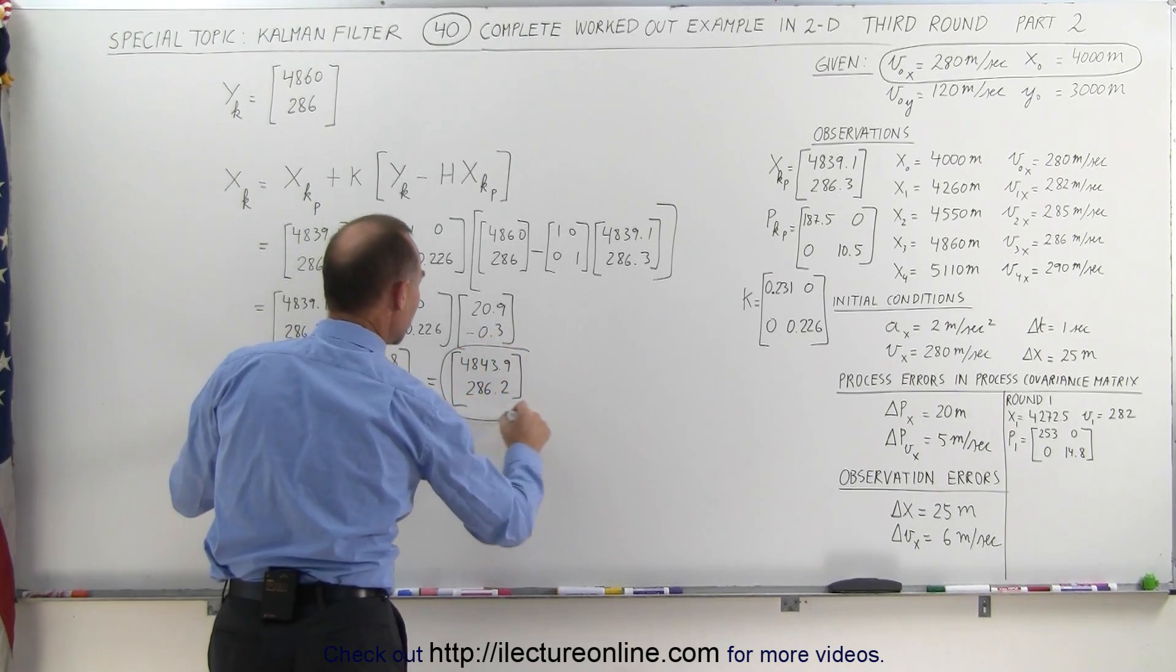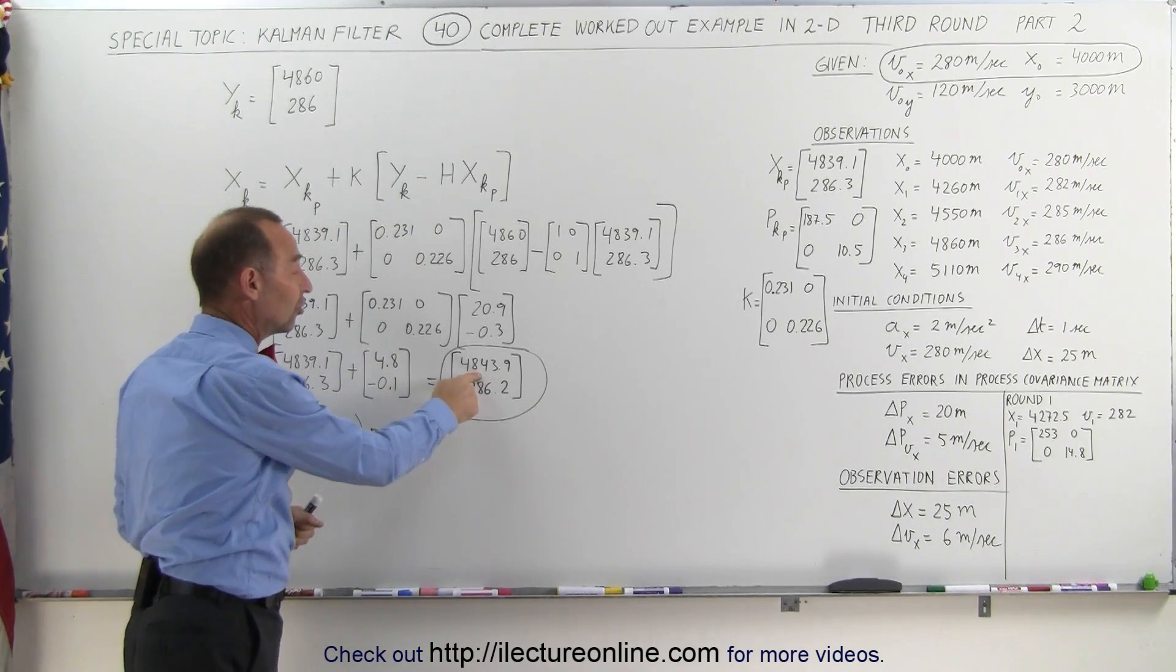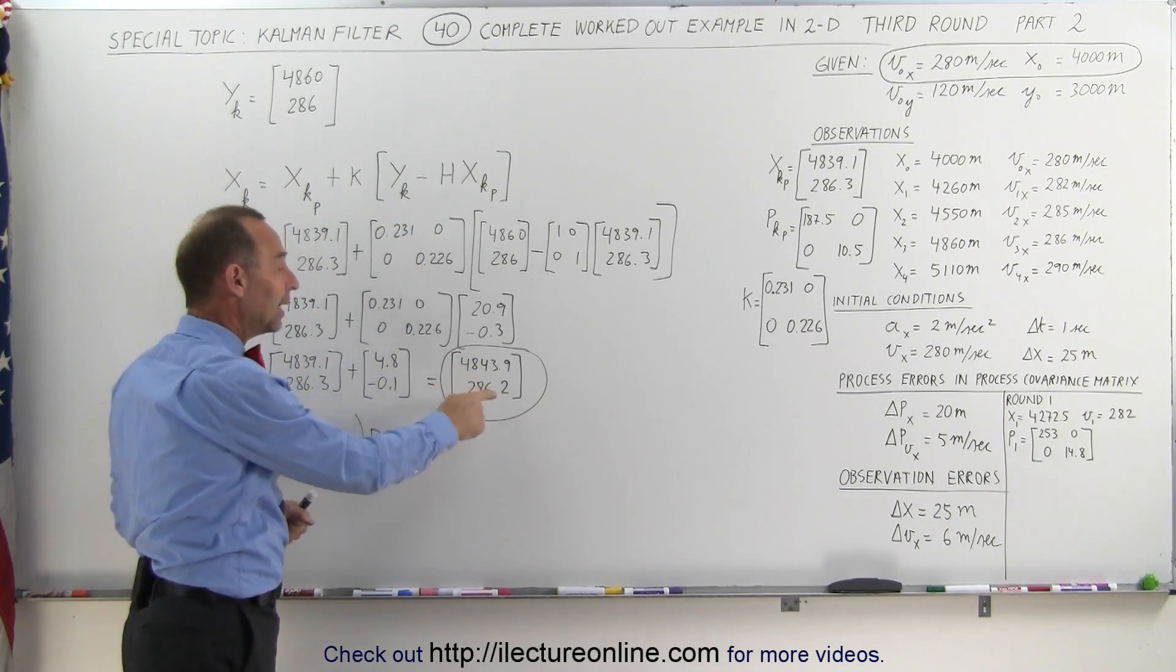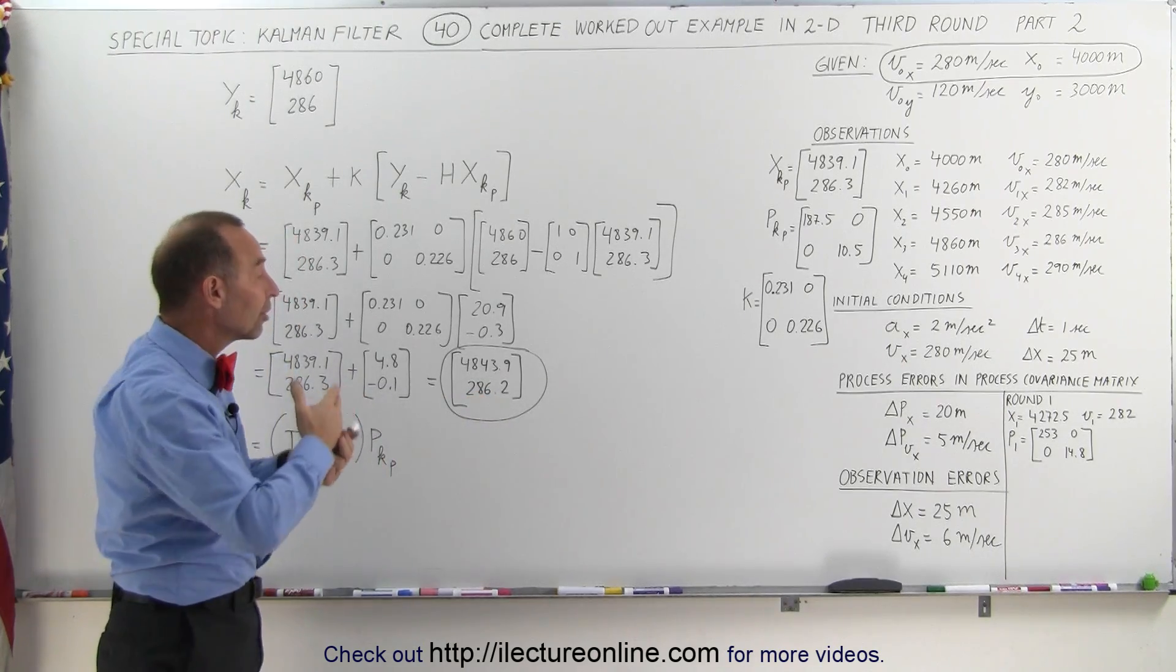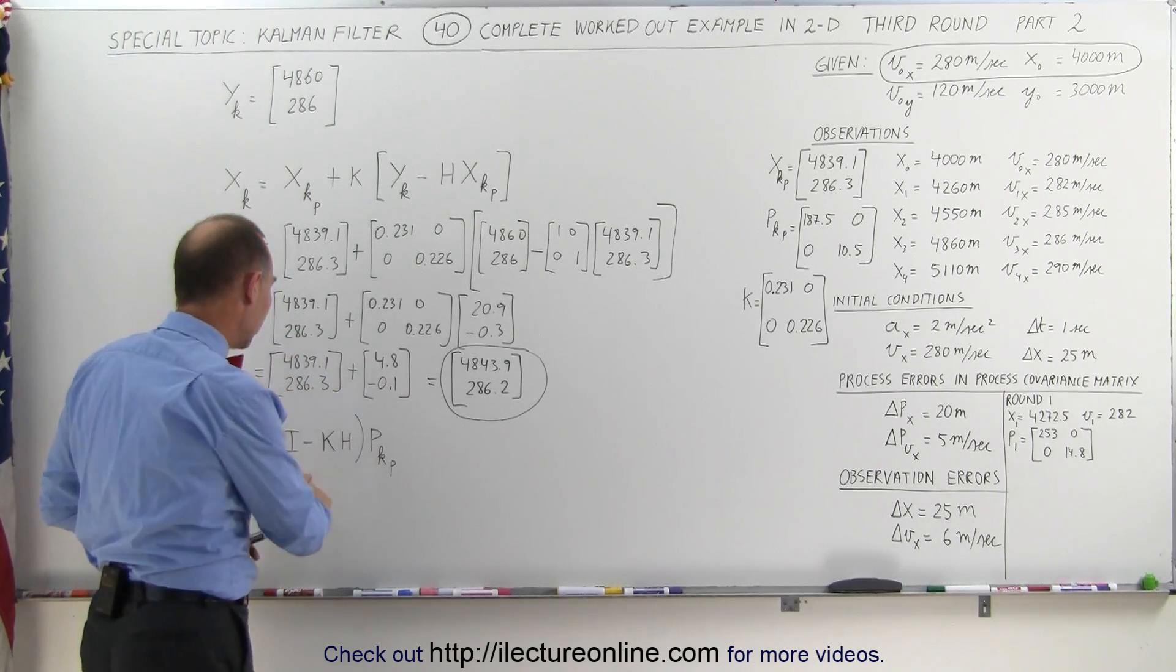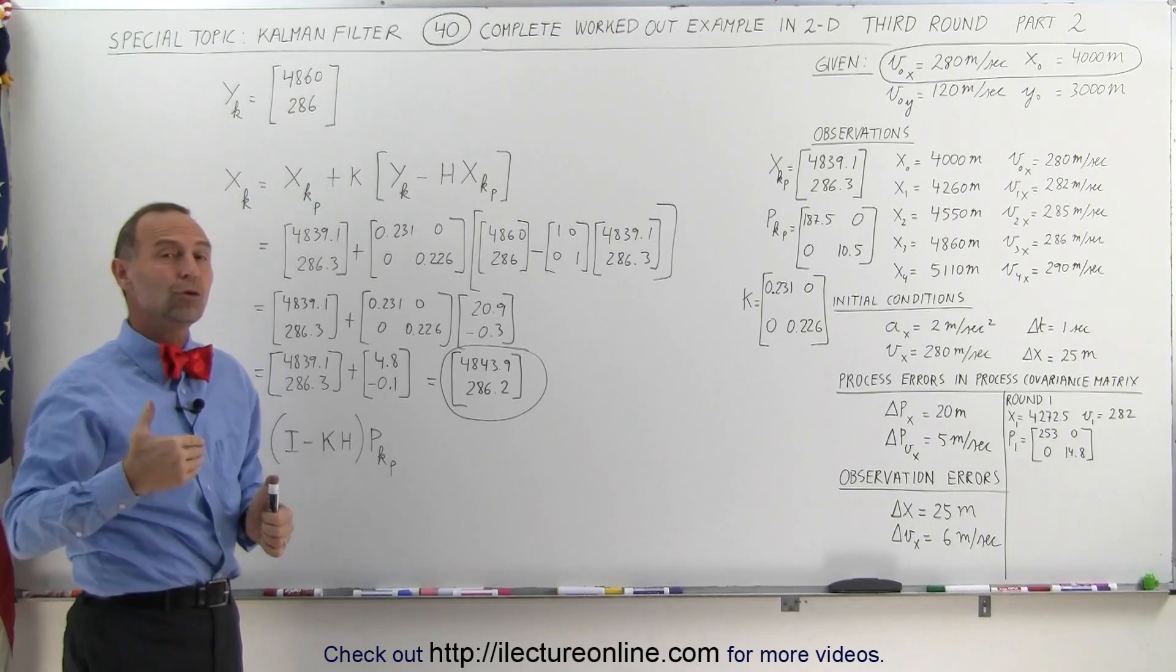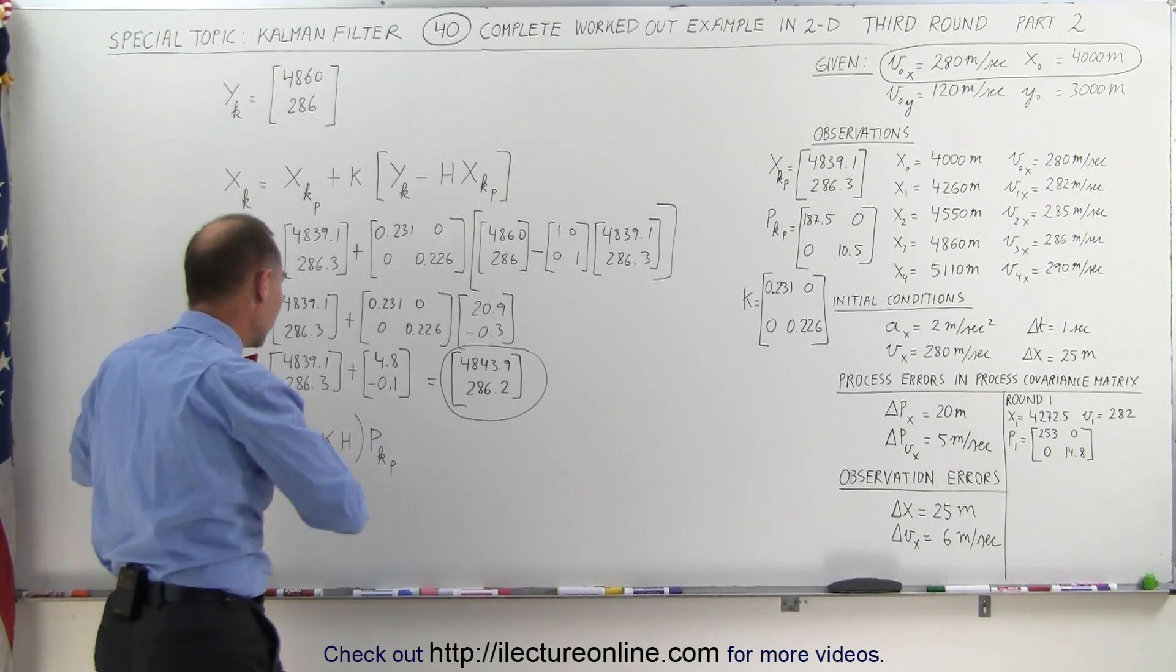And this is really the key to the whole process. This gives us the adjusted position of the plane and the adjusted velocity of the plane, based upon predicted values, based on observed values, and then using the Kalman gain to put a proper weight between those two. Then we also need to come up with a new process covariance matrix that would be used in round four. Let's go ahead and do that as well.